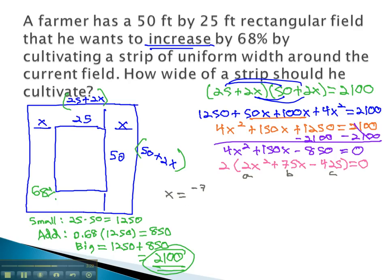x is equal to the opposite of b, or negative 75, plus or minus the square root of b squared, or 75 squared, minus 4ac, 2 times negative 425, all over 2a, 2 times 2.